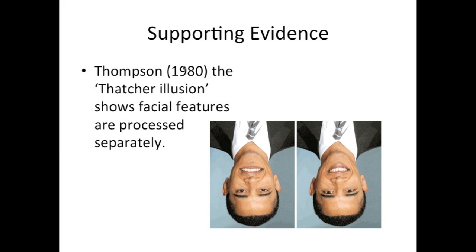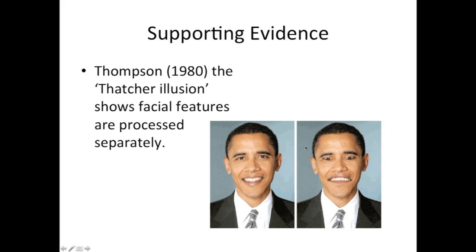This is the Thatcher illusion, even though it features Barack Obama. Most of you have seen this before and will already be identifying parts of Obama that don't look quite right. You'll remember that the first time you saw it, you didn't see anything particularly unusual — the mouth and eyes don't look quite right, but that seems okay until we turn the image the other way up, and they look surprisingly different. Basically, the eyes and mouth have been removed and turned upside down. This again suggests that facial features are processed separately — we see faces but don't really process them in as much detail as we seem to think we do.